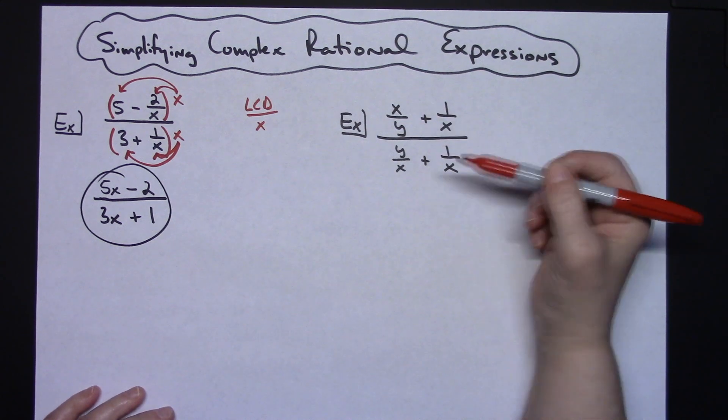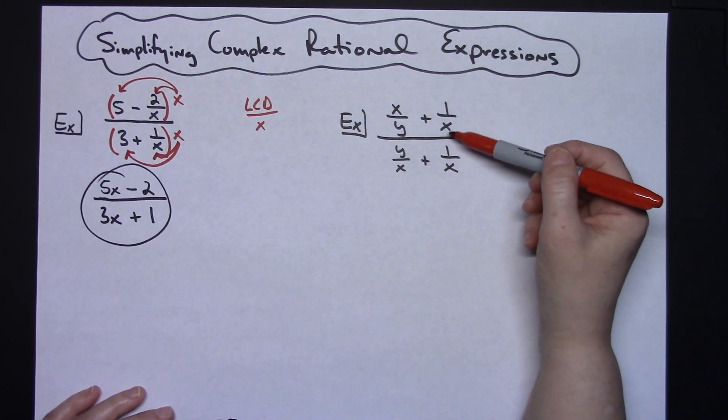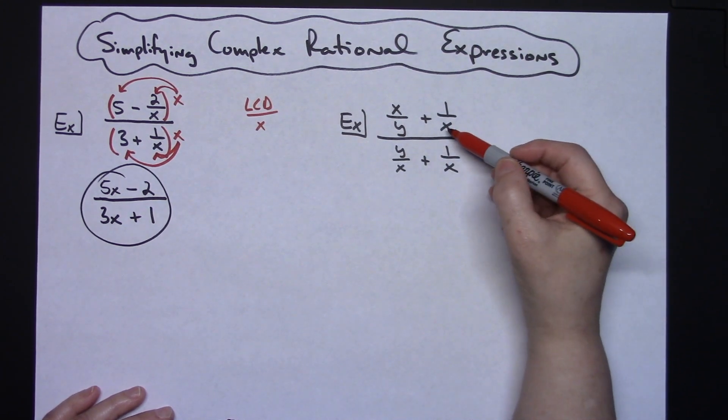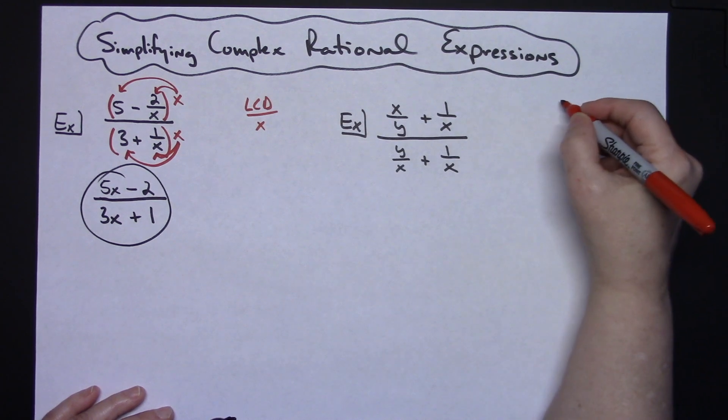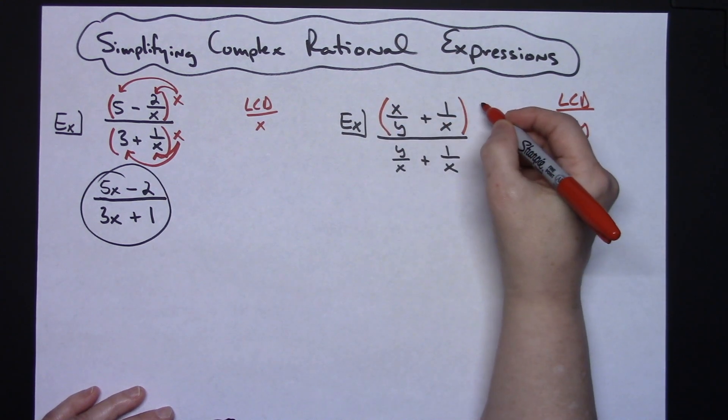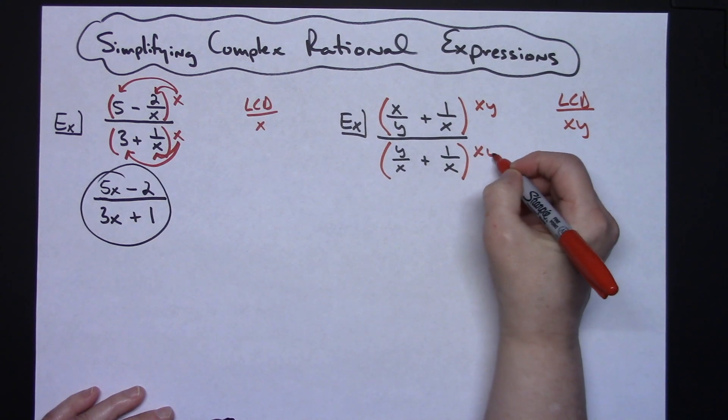On this example over here, I'm going to look at all my denominators in every location here. So I've got an x, an x, an x, and an x, and a y right there. So my least common denominator is going to be x times y. I'm going to multiply this top by x times y, I'm going to multiply the bottom by x times y.